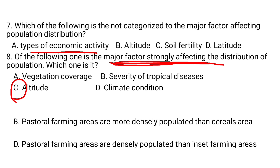As altitude increases, the density of vegetation increases and rainfall increases. As altitude decreases, vegetation density decreases. As altitude increases, the severity of tropical diseases decreases; as altitude decreases, severity increases. As altitude increases, climate becomes cooler; as altitude decreases, climate becomes warmer. Therefore, altitude is the major factor affecting vegetation coverage, severity of tropical diseases, and climate conditions. So D is the major factor.